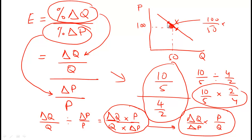There are two or three ways to do this. In the basic way, let's say quantity changes from 49 to 51, so Δq = 2. And let's say price changes from 98 to 102, so Δp = 4. You plug in those numbers and you have your answer.